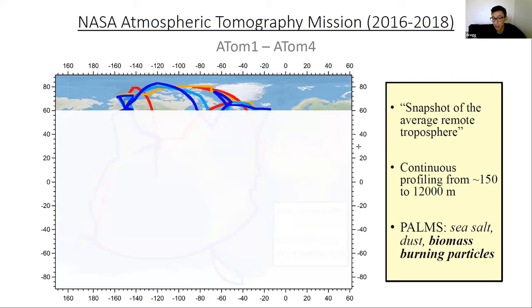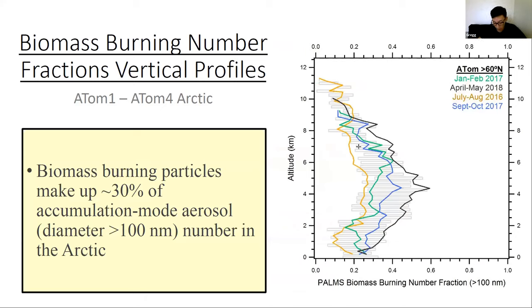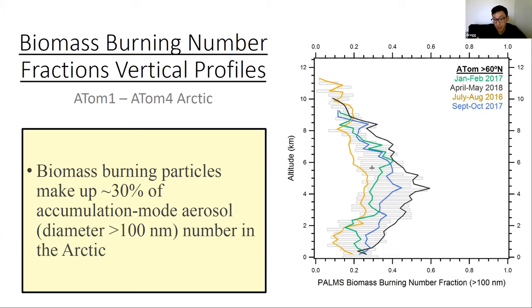For this talk I'm limiting the discussion to arctic regions, using an arbitrary cut of 60 degrees north. This plot shows the biomass burning number fraction vertical profile — altitude on the y-axis, PALMS biomass burning number fraction on the x-axis. A value of 0.2 means 20% biomass burning particles; 0.4 means 40%. I'm referring to accumulation mode aerosol, particles with diameters greater than 100 nm.